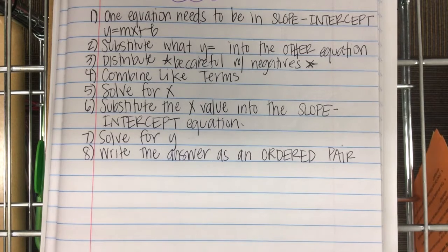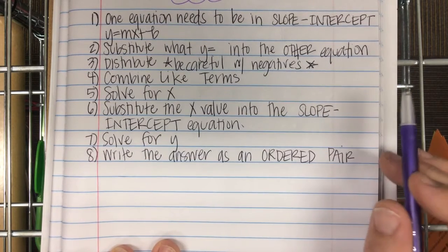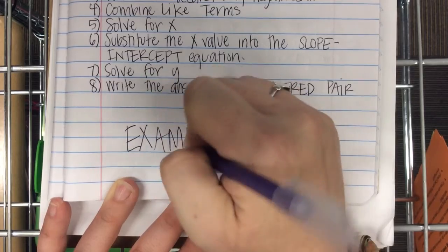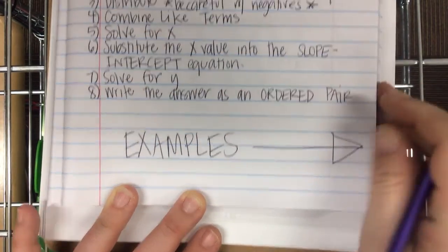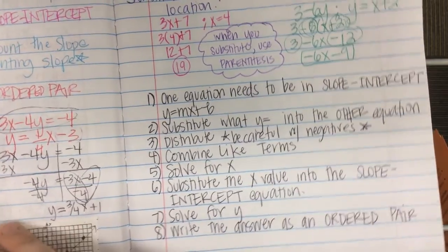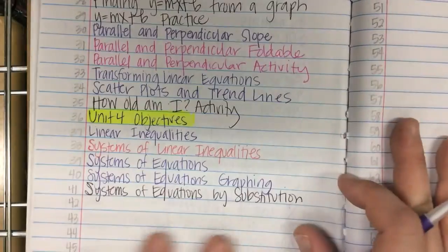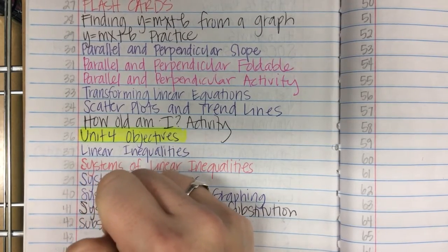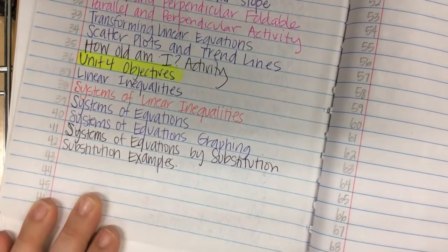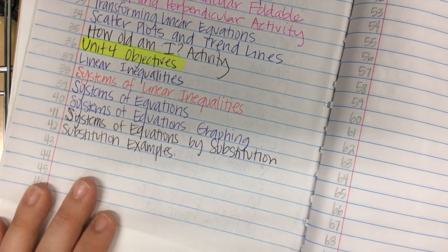Lots of times, step six can be done with mental math. You know what? Let's put the examples on page 41, so just we don't squeeze. I mean examples on page 42. So go back to your table of contents, and 42 is going to be examples. Substitution examples.